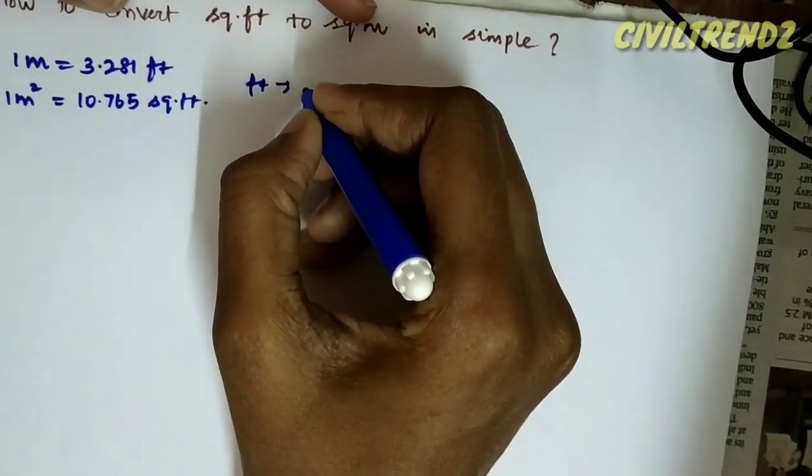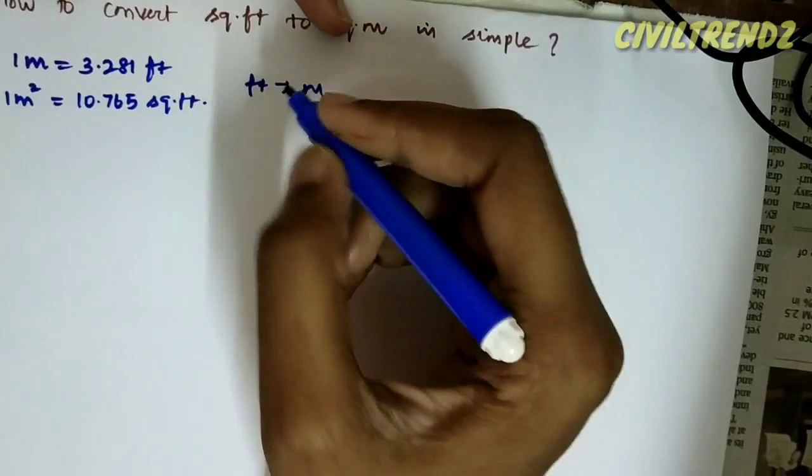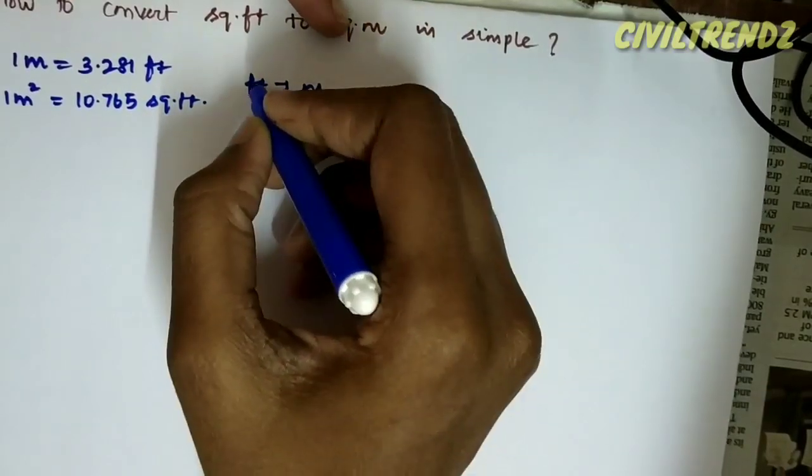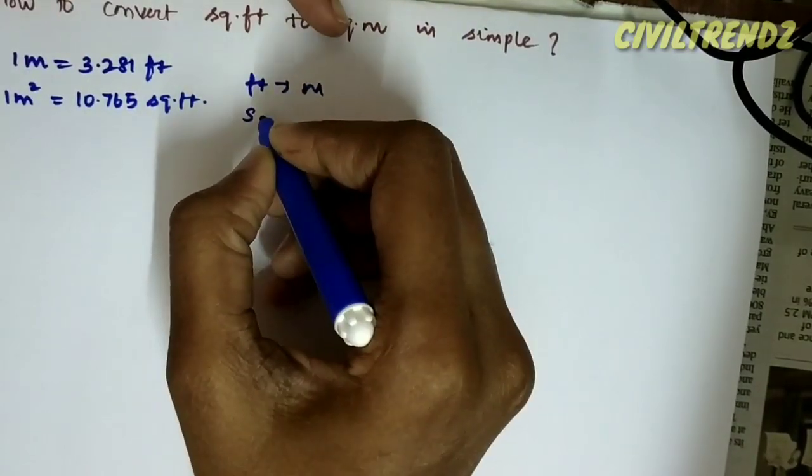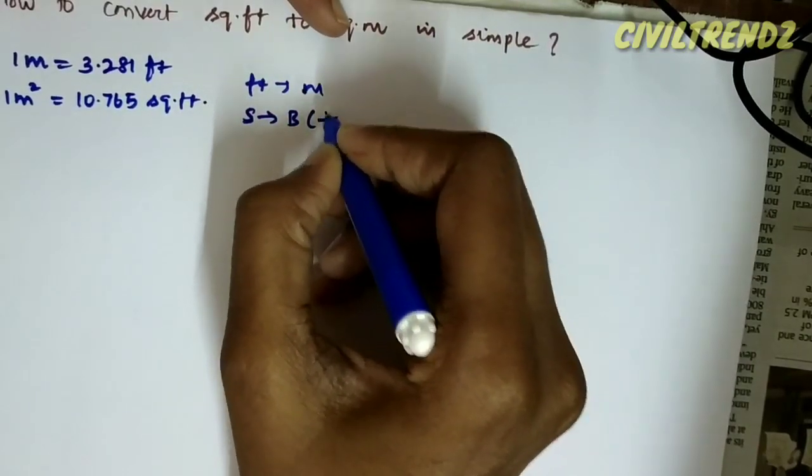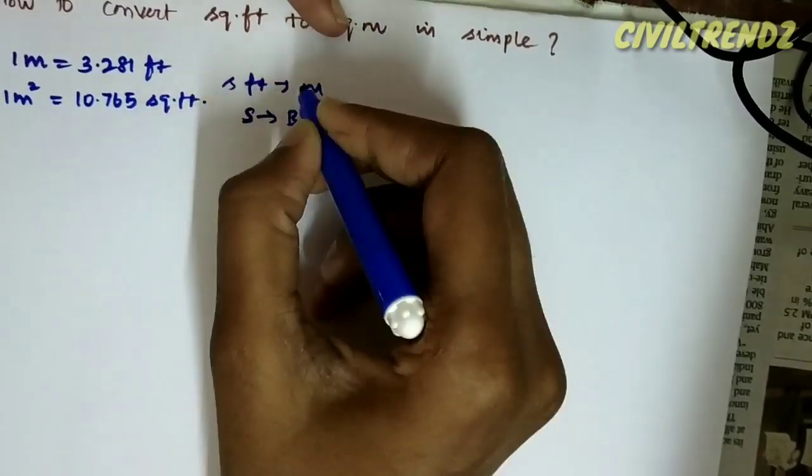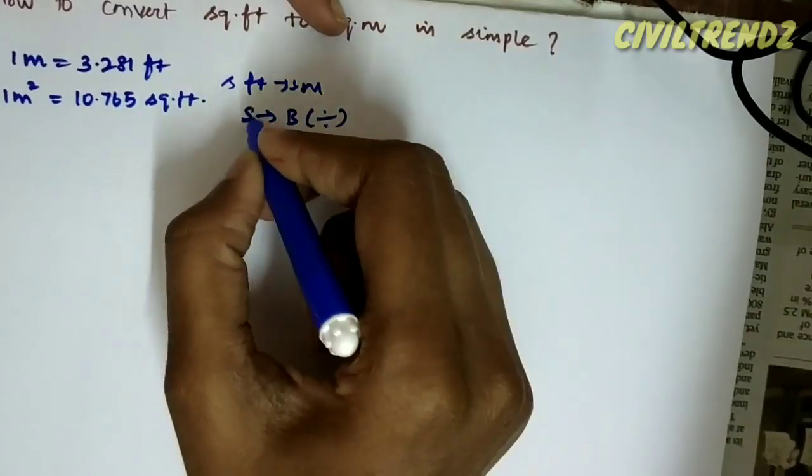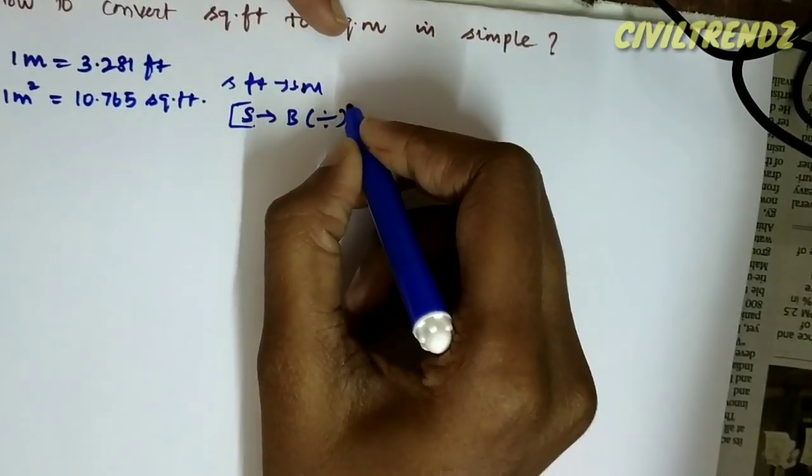Feet to meter. Small dimension to big dimension. Square feet to square meter. Small to big, covered by divide.